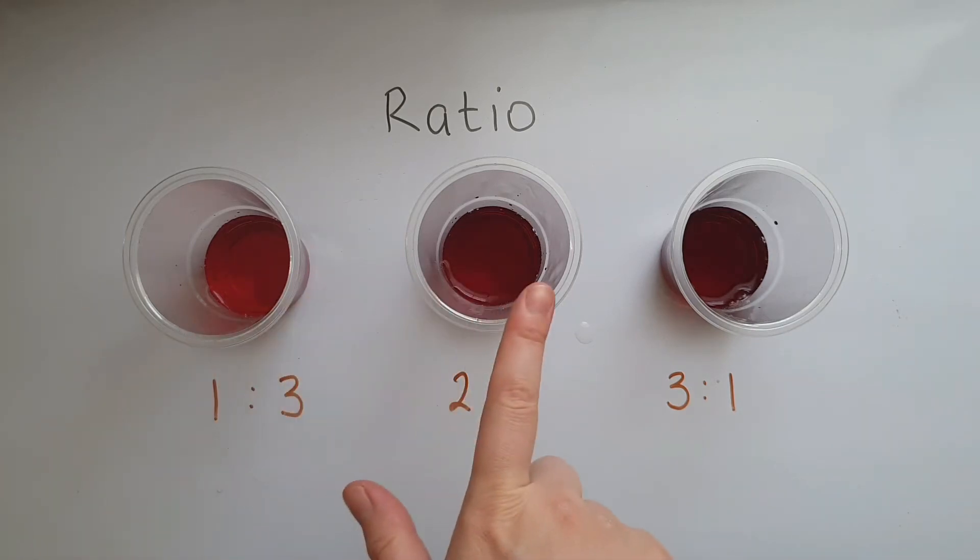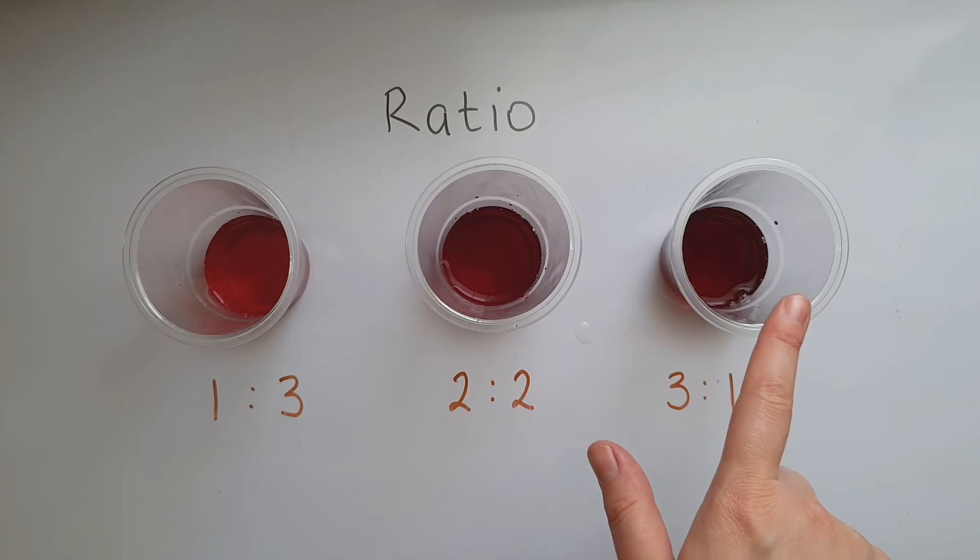This is lighter, this is darker, and this is even darker. It's the same amount of mixture—four spoonfuls in all three—but we've used different ratios. This has less squash, this has more, and this has even more.